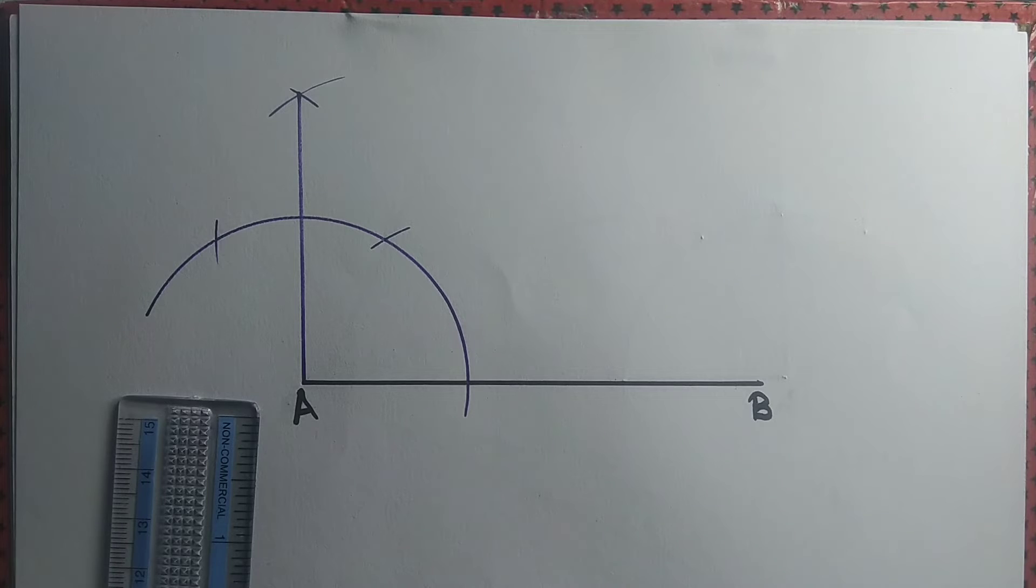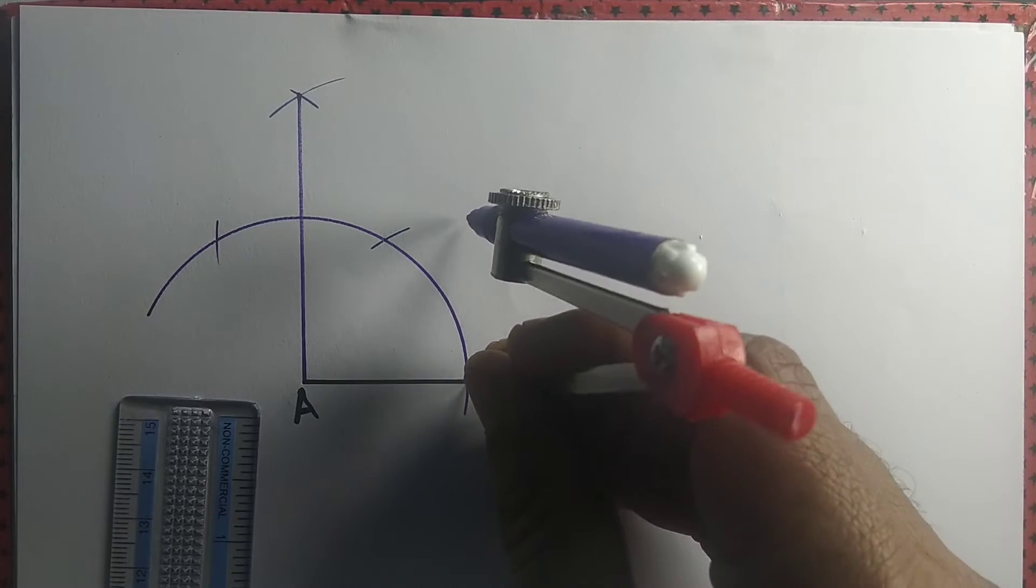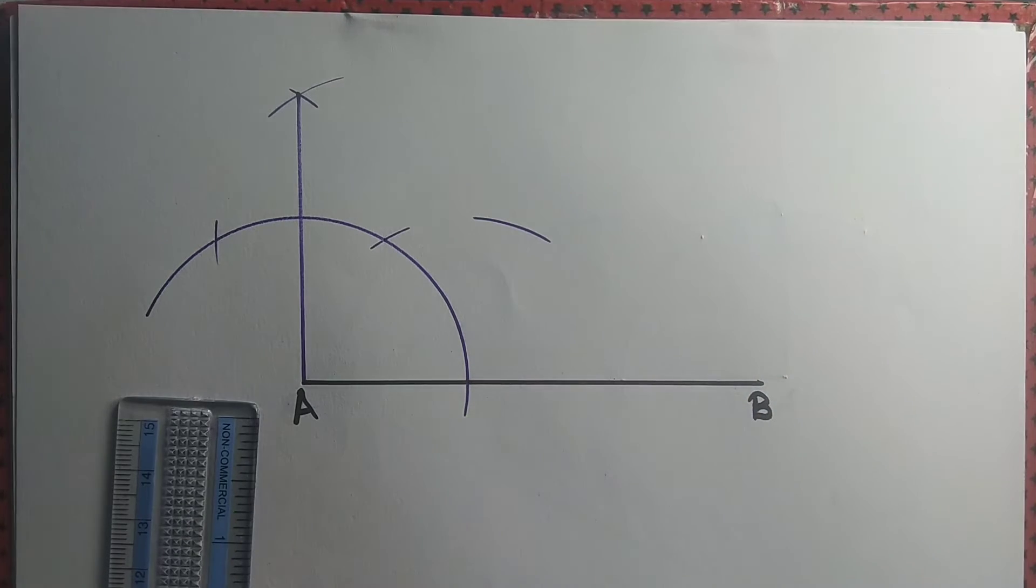We get angle A equal to 90 degrees, but we want the angle to be 45 degrees. So what we do is we just bisect the 90 degree angle.